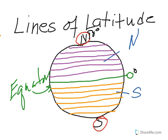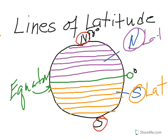Bad drawing, but you get the point. All of these lines up here, because they're in the Northern Hemisphere, are north latitude. All of these lines down here, because they're in the Southern Hemisphere, are south latitude. So this is how we get the first set of lines that we need for creating the grid on the surface of the Earth.